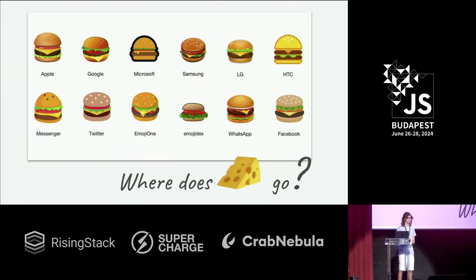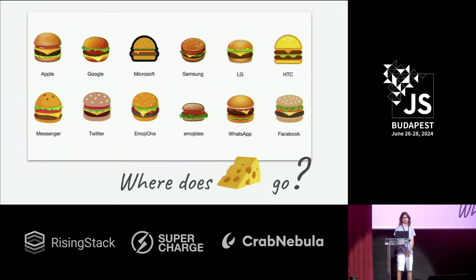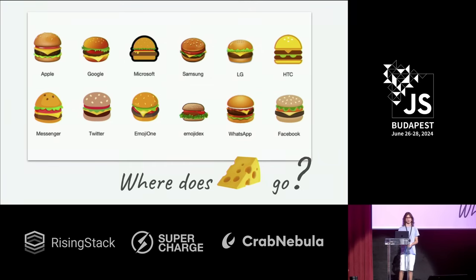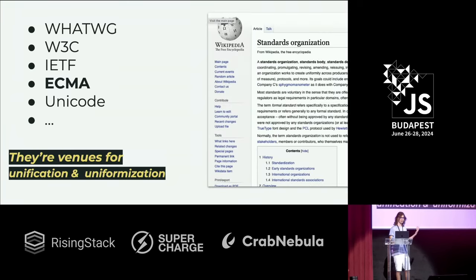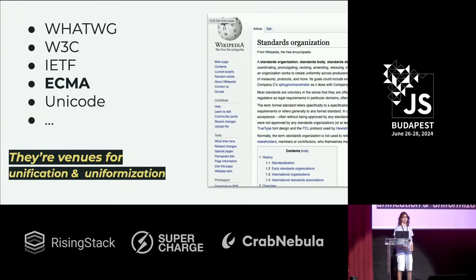I don't know if you remember, but this is like Android 8. There was a very big controversy about the Google burger emoji being wrong. Who puts the cheese at the bottom of your cheeseburger? This doesn't really matter in practice, even though there were news articles about it, and at some point the Google CEO himself had to say they'd fix the emoji. But how do you decide where is the right place to put the cheese? Well, there are these groups — standard bodies — where all of these decisions get made.